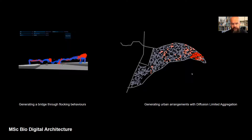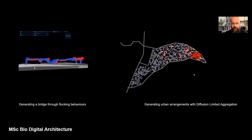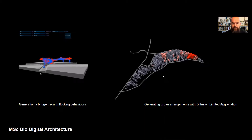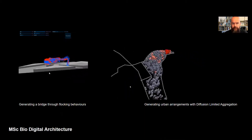Nature is a creative engine generating shape and form and solving problems in a way that we can simulate in computers — i.e., we can use computers to think in a parallel manner.